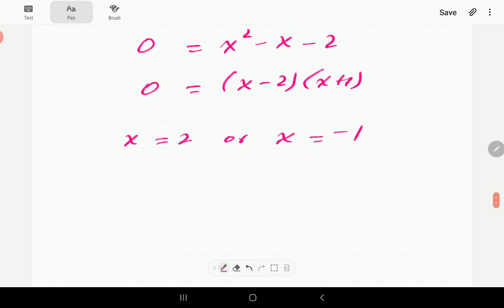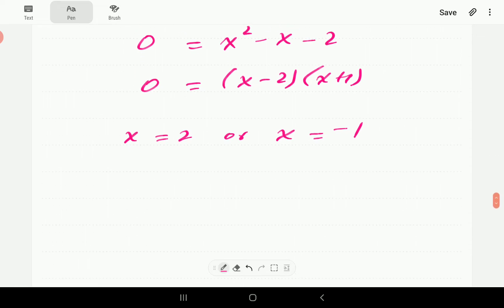So this is going to tell us that either x is 2 or x is negative 1. So whenever we get two solutions, then it is always advisable to check with the original equation.